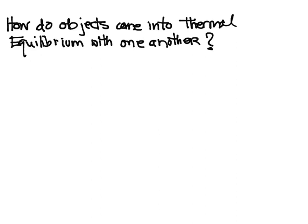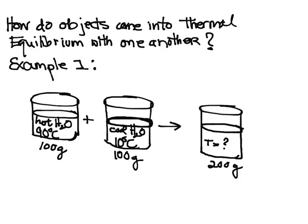The first thing we're going to talk about is how objects come into thermal equilibrium with one another, and we're going to use an example. We have 100 grams of hot water at 90 degrees C, and we're going to mix it with 100 grams of cold water at 10 degrees C. We put it inside a thermos-like container so no heat gets in or out. We have 200 grams of water at the end, and we want to know the final temperature.